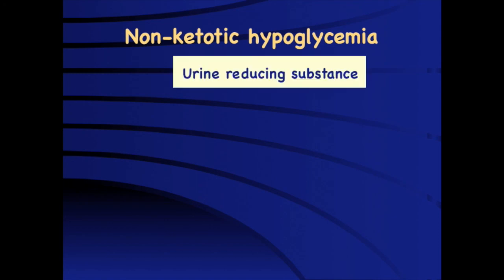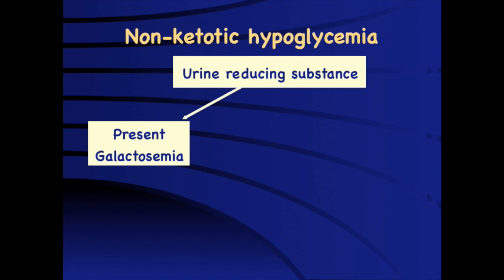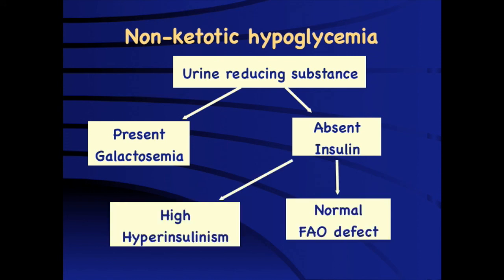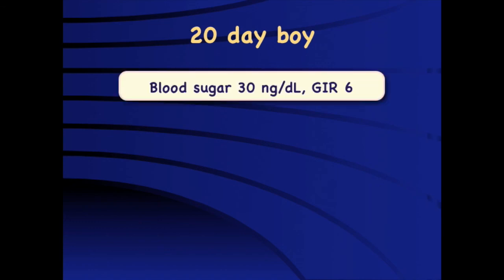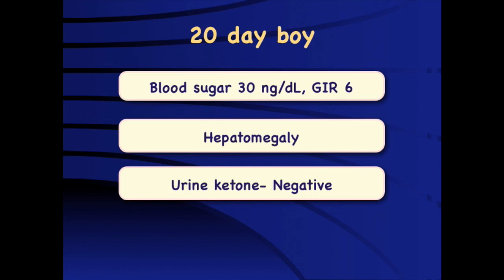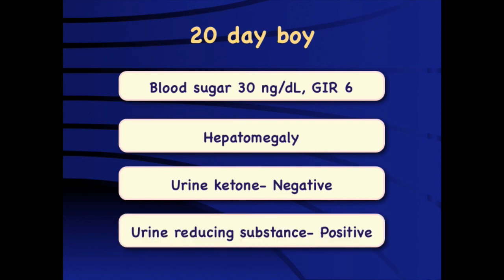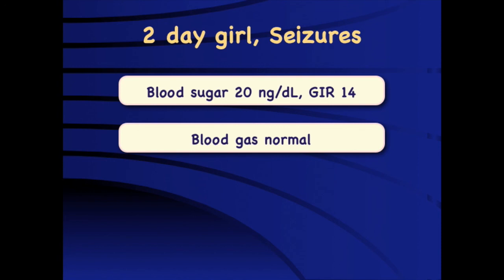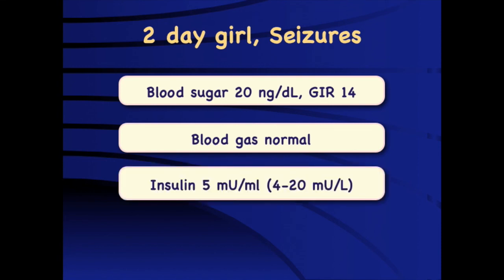For non-ketotic hypoglycemia, we look at urine reducing substances. If present, it confirms galactosemia or fructose intolerance. If absent, check insulin — any detectable insulin suggests hyperinsulinism, while normal insulin levels suggest fatty acid oxidation defect. Case 5: A 20-day-old boy, blood sugar 30, glucose infusion requirement 6 mg/kg/min, hepatomegaly, urine ketones negative — non-ketotic hypoglycemia. The glucose infusion requirement is not very high, going against hyperinsulinism; urine reducing substance should be checked to confirm possibility of galactosemia.